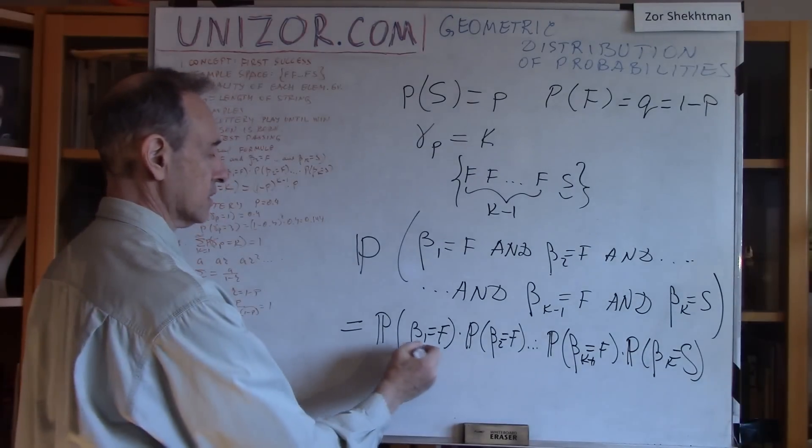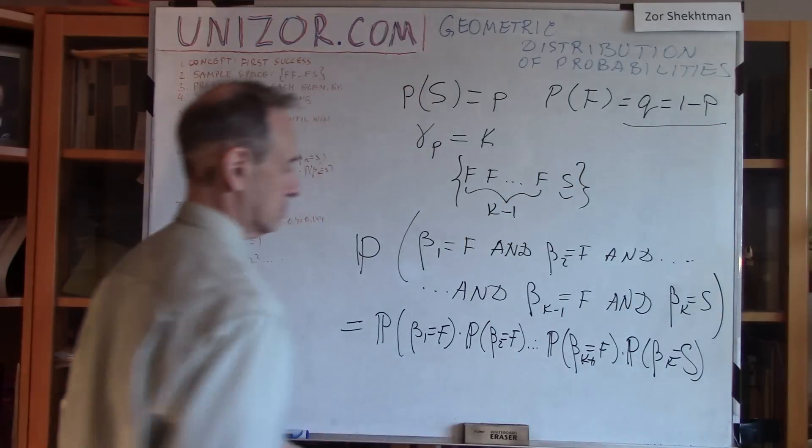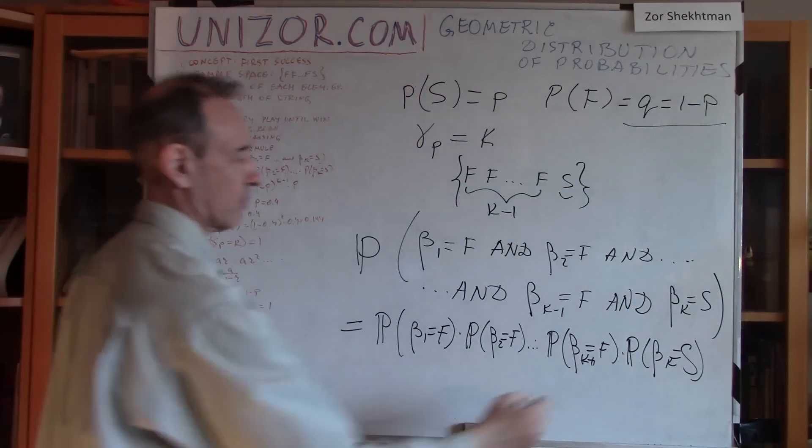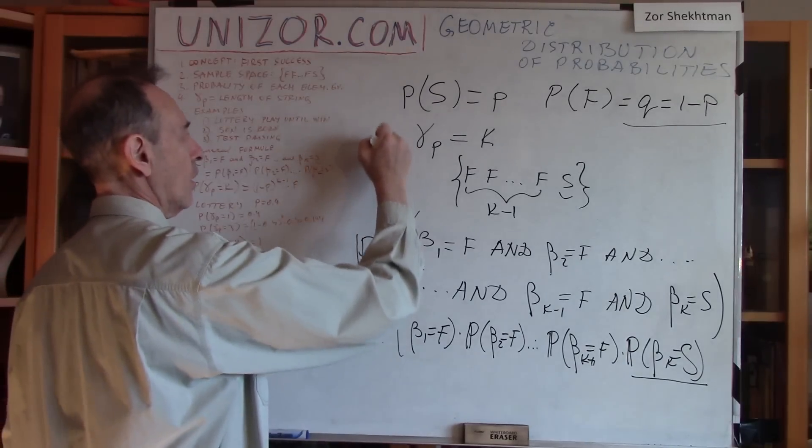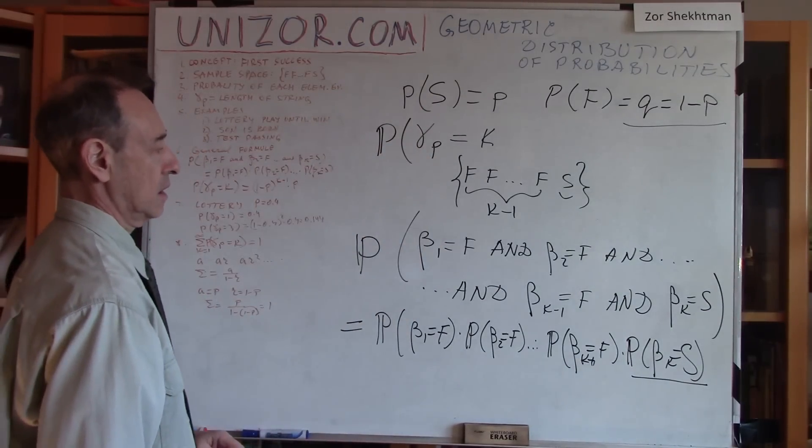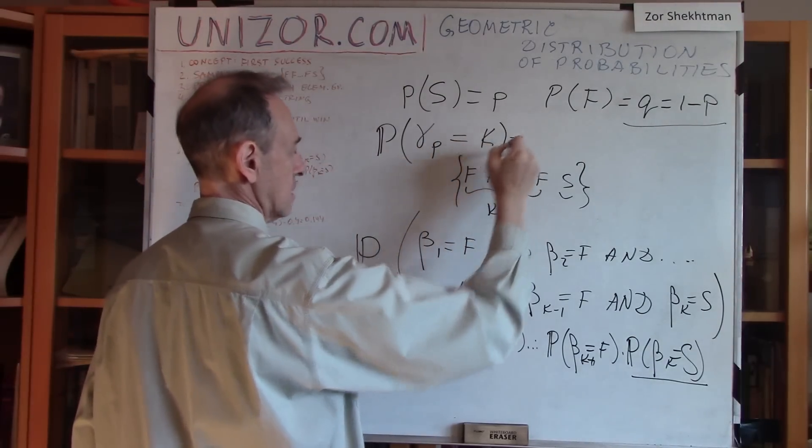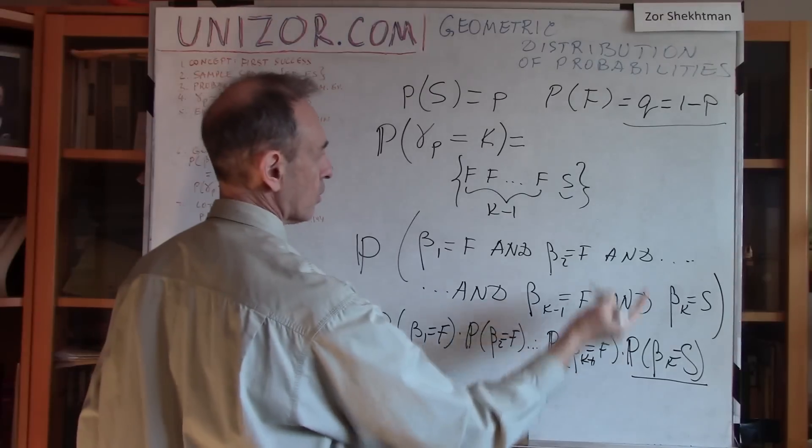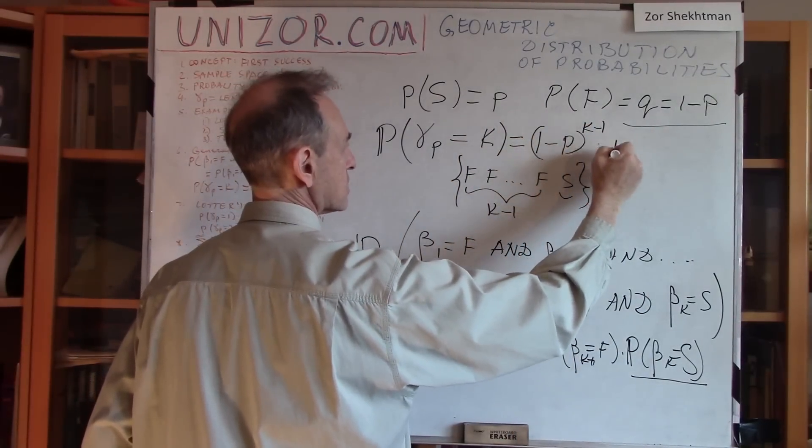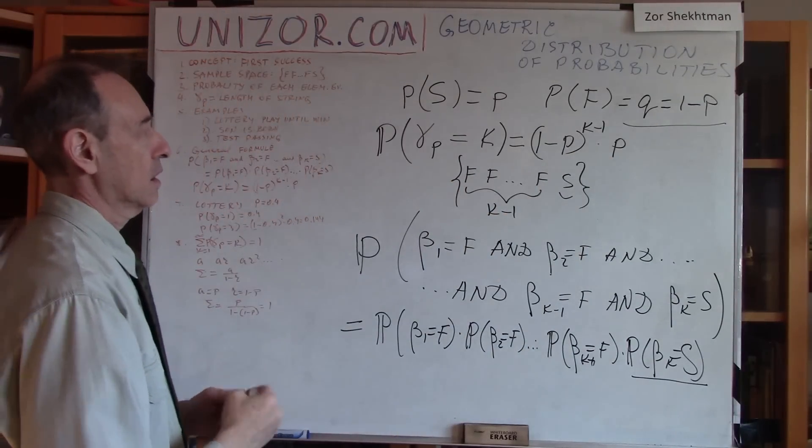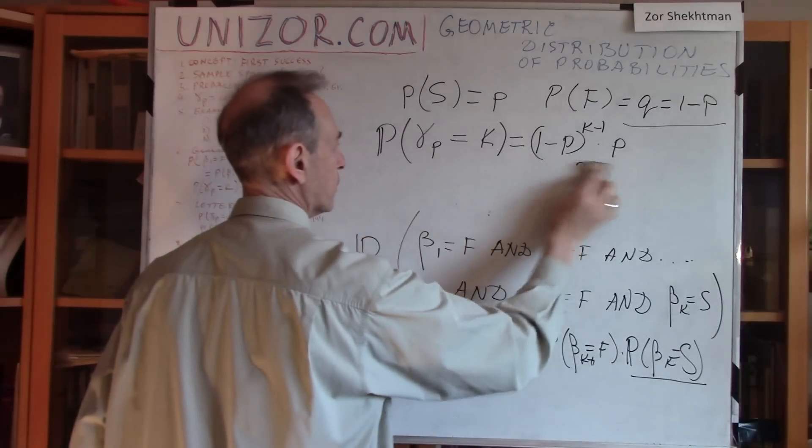And what is this? Well, the probability of Bernoulli experiment to be equal to F is Q, 1 minus P, and the probability of success is P. So the probability of our random variable gamma with index P equal to K is Q, Q, Q, Q, or 1 minus P, if you wish, 1 minus P, to the power K minus 1 times P. So that's the probability of gamma taking a particular value K.